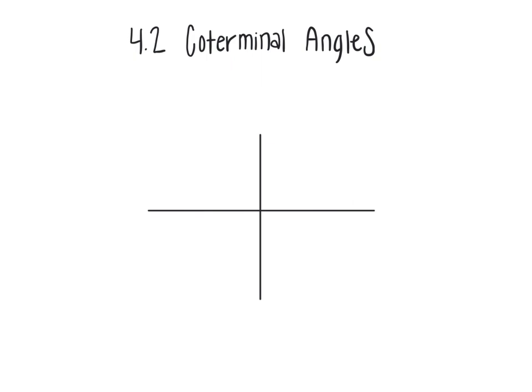There are a couple of important aspects about angles on a quadrant plane. The first aspect is that an angle always has two sides. The first side is referred to as the initial side and is always located on the x-axis. The second side of the angle is referred to as the terminal side. The direction in which the angle opens also impacts whether the angle is considered to be positive or negative.